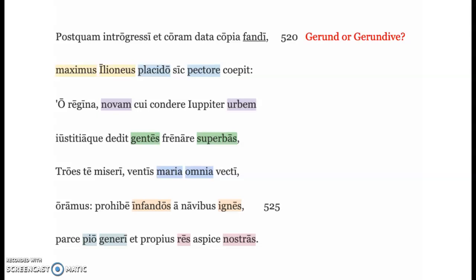Salve te omnes, welcome back to the Aeneid Book One. Postquam introgresi et coram data copia fandi, maximus Ilioneas placidos sic pectore coepit: O regina, novam cui condere Iuppiter urbem iustitiaque dedit gentes frenare superbas, Troios te miseri ventis mari omnia vecti.